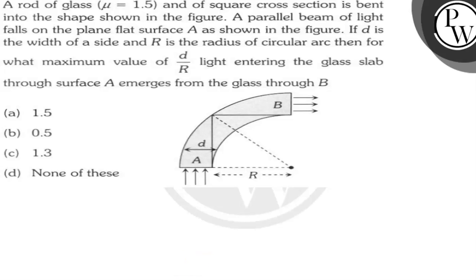Now they are saying, if light is entered from A, then what will the maximum value of D upon R that light through surface A emerges from glass B.